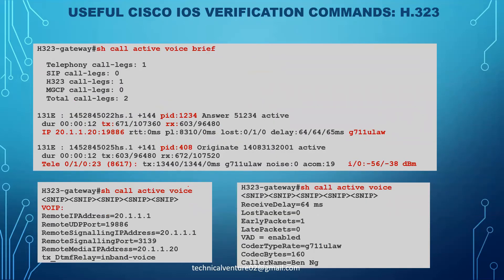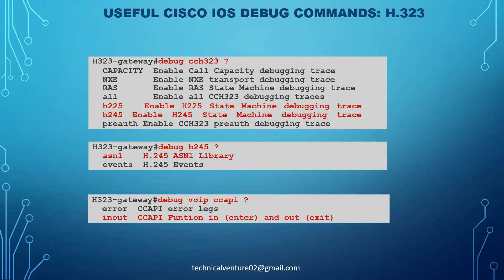For verification, use 'show call active voice brief' to display telephony call legs, H323 call legs, and total call legs. The command 'show call active voice' provides full details including IP address, remote IP address, UDP port number, remote signaling IP address, and remote signaling port - everything related to an active call.